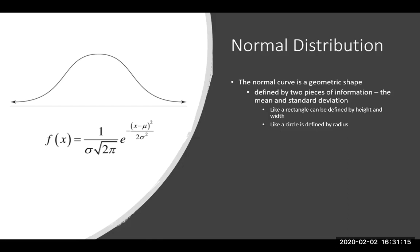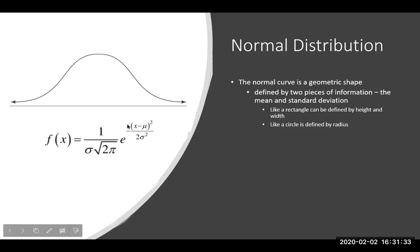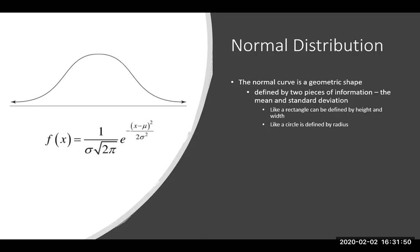The normal curve is defined by just two pieces of information: the mean and the standard deviation. If you look at the formula, the mean and standard deviation are what define what it looks like. All the other things are constants or computations, but the only two things that vary are the mean and the standard deviation. Just like a rectangle is defined by height and width, or a circle by its radius, the normal distribution is defined by the mean and the standard deviation.